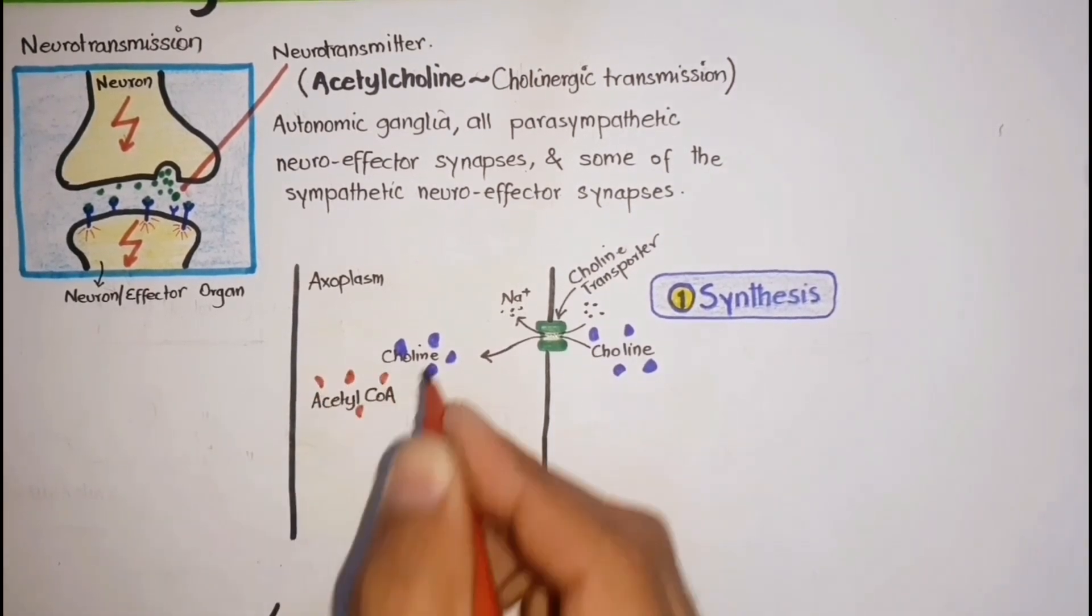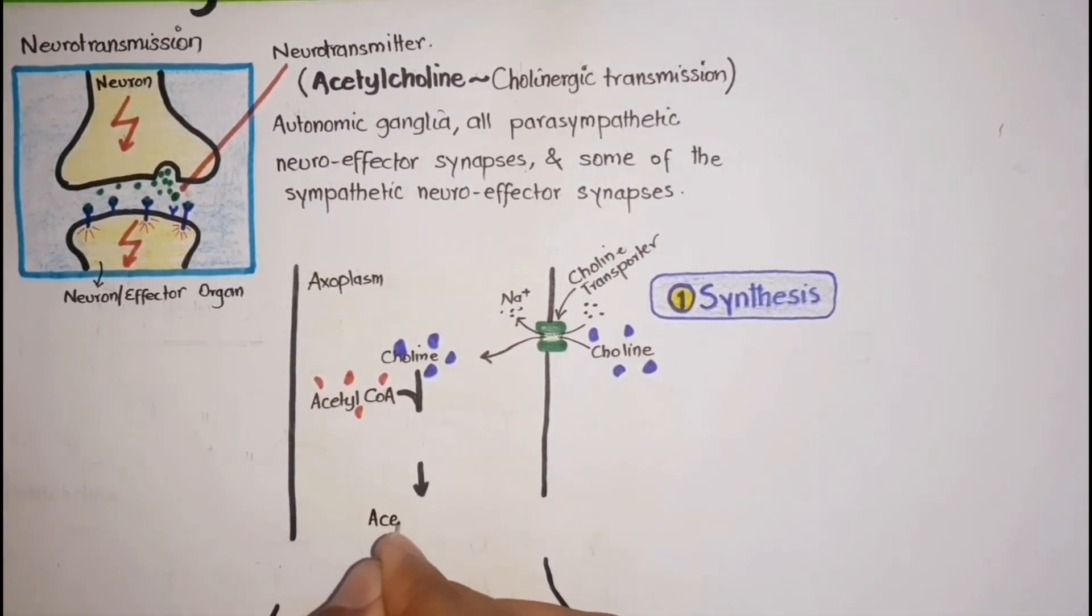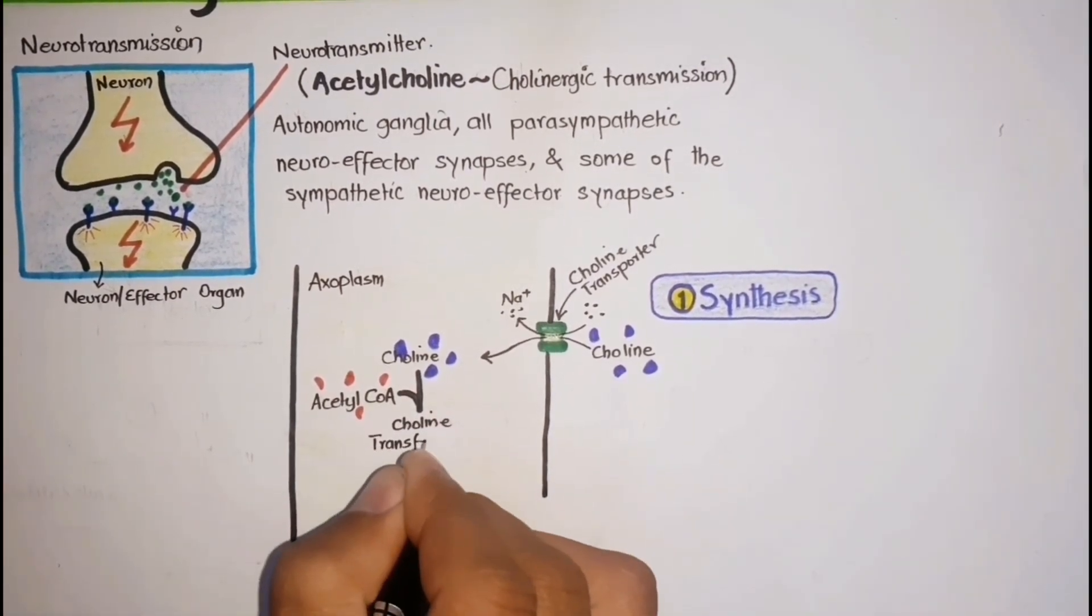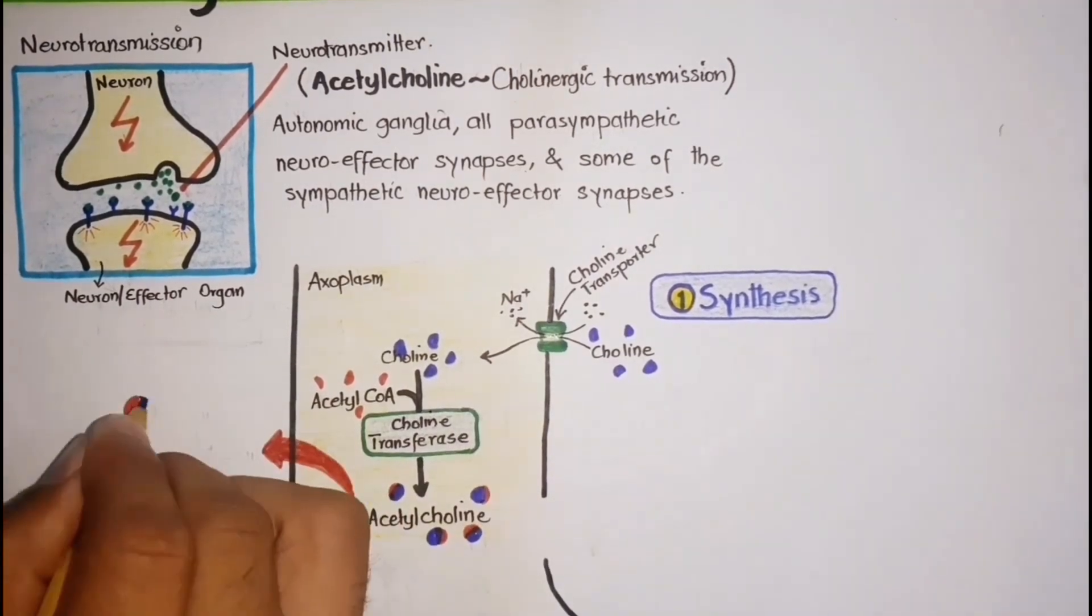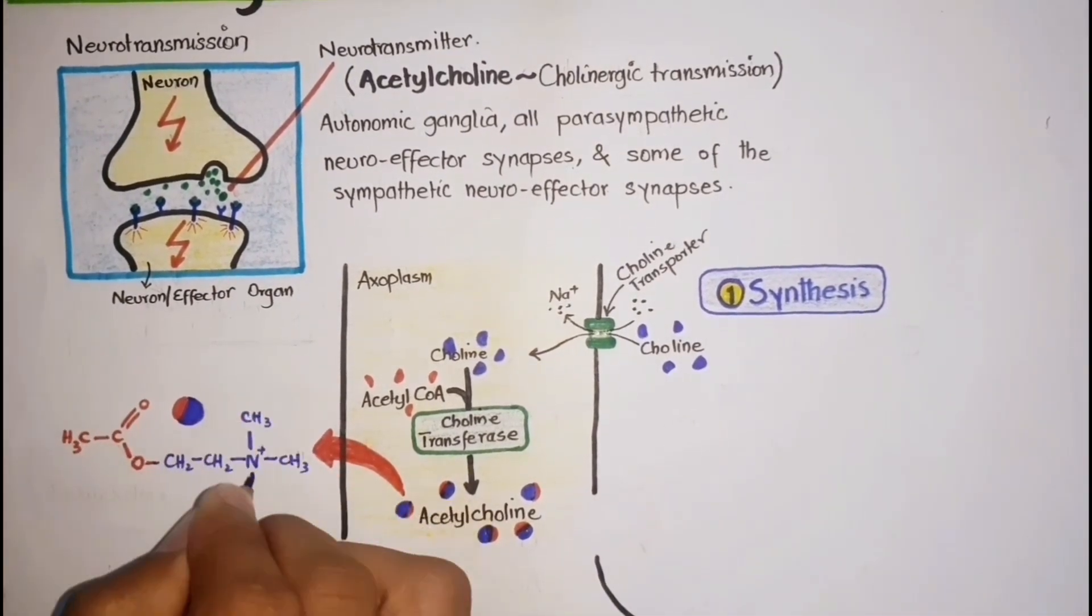Choline inside the cholinergic neuron reacts with acetyl-coenzyme A to form acetylcholine in the cytosol, in the presence of the cytosolic enzyme choline acetyltransferase. This is the chemical structure of the neurotransmitter acetylcholine.